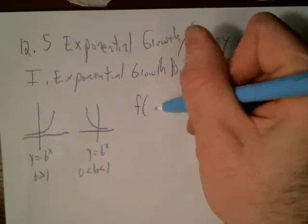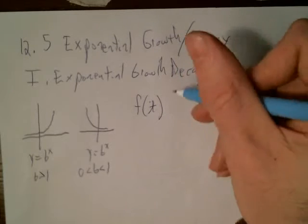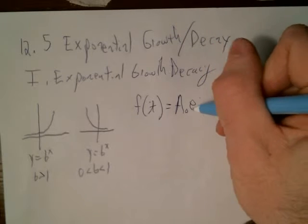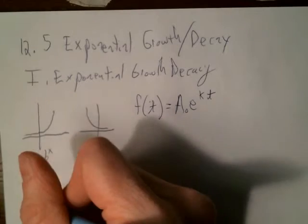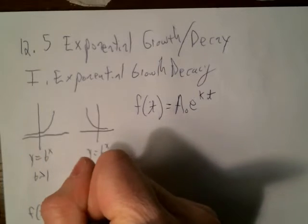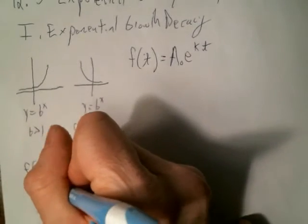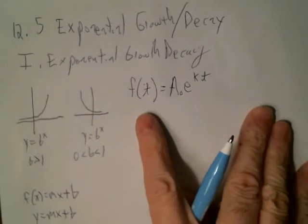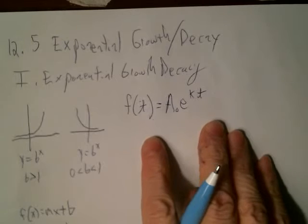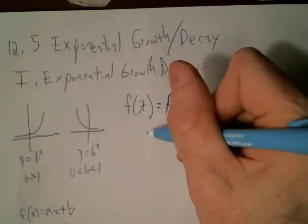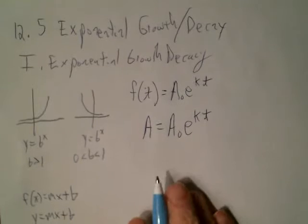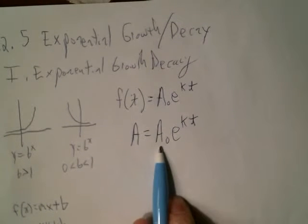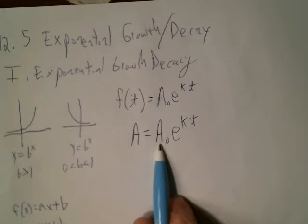So without further ado, here is the official form: f of t equals A₀e^(kt). And they also write it without this f of t. So you know how you can write f of x equals mx plus b, but you could also write it y equals mx plus b. It's the same idea here. Instead of writing f of t equals A₀, we can write y equals A₀e^(kt). But in general, what they're going to do is just write A equals A₀e^(kt).